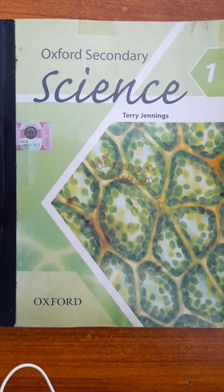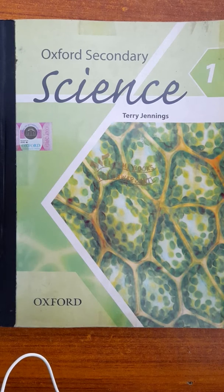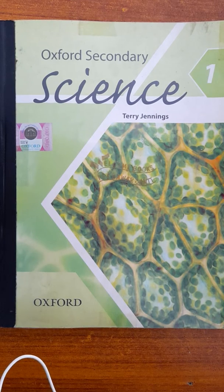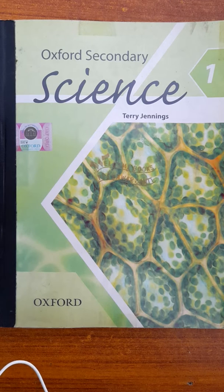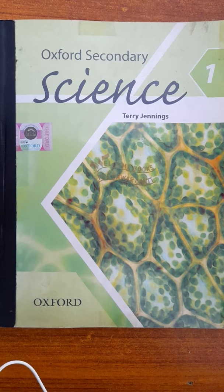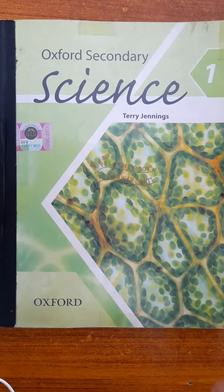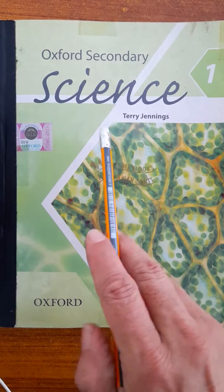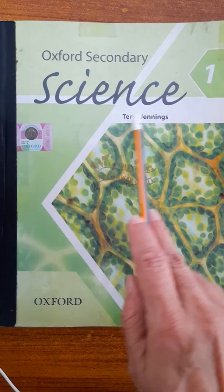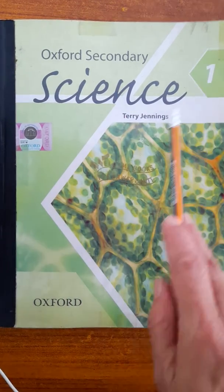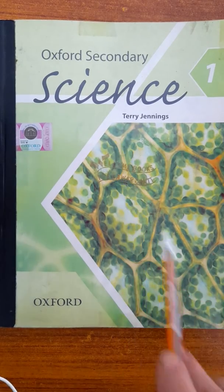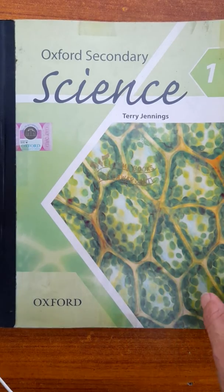Bismillahirrahmanirrahim, Assalamu Alaikum. I'm your science teacher here with the short summary of today's science Zoom online lecture number one. It is taken from chapter number one, Cell Tissues and Organs, and it is on page two and three of your book — the Oxford Secondary Science Book 1 written by Terry Jennings.